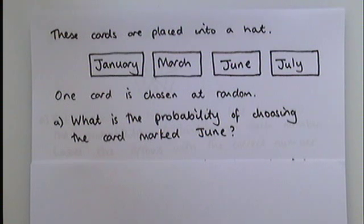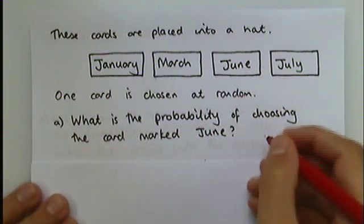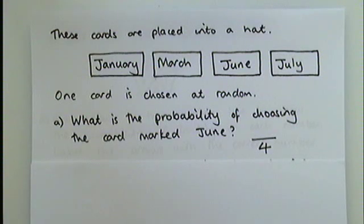To answer this question, what you need to do is look at, first of all, how many different cards there are in the hat. How many different possibilities are there of what you could draw from the hat? You could draw this card, this card, this card or this card, a total of four cards. So we're going to write a fraction out of four.